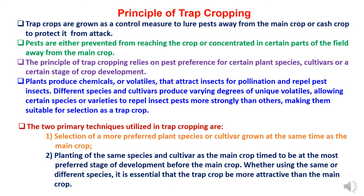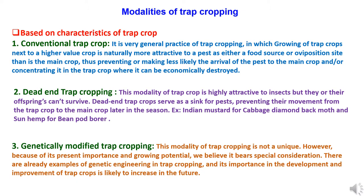There are two primary techniques for trap cropping. First, selection of a more preferred plant species or cultivar grown at the same time as the main crop. Second, planting of the same species and cultivar as the main crop, timed to be at the most preferred stage of development before the main crop. Whether using the same or different species, it is essential that the trap crop be more attractive than the main crop.